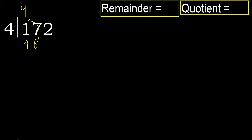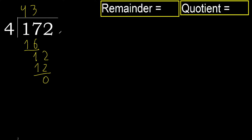4 multiplied by 4 is 16. 16 is not greater. 17 minus 16 is 1. Next: 12. 4 multiplied by 4 is 16 — that is greater. 4 multiplied by 3 is 12, which is not greater. 12 minus 12 is 0. Next, there is no number.